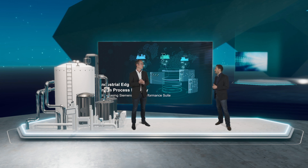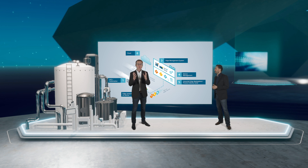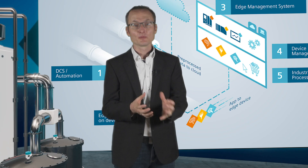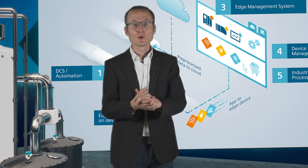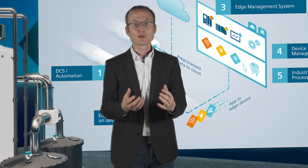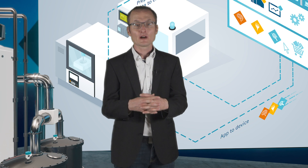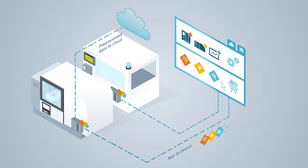So, how does it all work? Siemens Industrial Edge is a secure open industry-grade solution that enables you to move applications, data processing and analytics from the IT world to the edge of the network and the edge of our customers' plant, close to their processes, without having to make major changes in the existing infrastructure. This is in line with the NAMU Open Architecture principles.